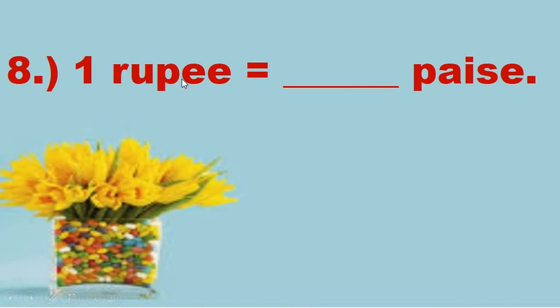Number 8. 1 rupee is equal to dash paisa. So, what should we write here? Can anyone know the answer? If we want to compare the rupee with the paisa, what is the value of 1 rupee in paisa? Let us see. One double zero, hundred. 1 rupee is equal to 100 paisa.